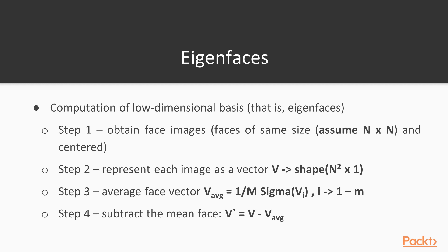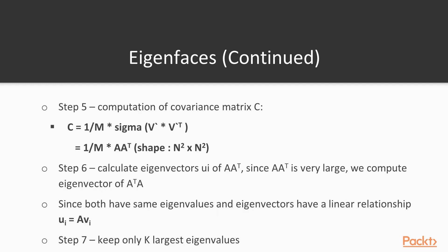In order to get the eigenfaces, we first obtain face images and make sure that the faces are of the same size and shape, and appear centered in the images. We represent each face as a vector of size n squared by 1. We then average out this face vector, followed by subtracting the mean face. And next, we compute the covariance matrix using the formula as you see in step 5.